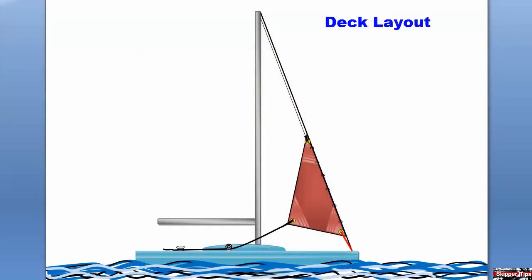Raise the tack of the sail several inches off the deck with a pennant. This keeps the sail out of the way of seas that break aboard the boat and provides better under-the-foot visibility for the person on watch. Lead the sheet to a jib block and then aft to a cockpit sheet winch.